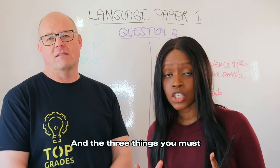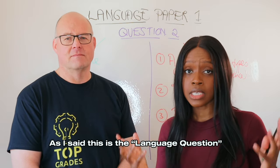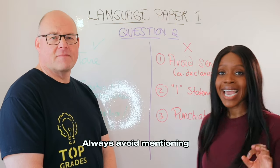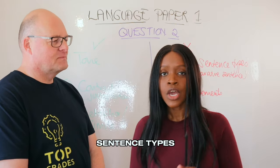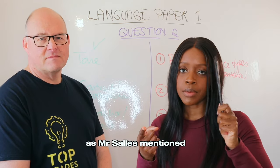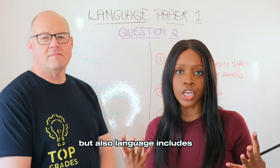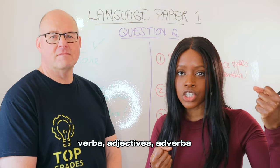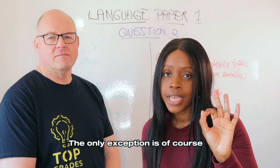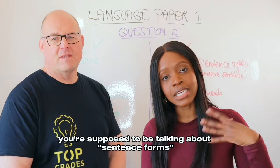The three things you must absolutely avoid in your question number two response — the language question. Number one: always avoid mentioning sentence types. Remember that language features mean things like metaphors, similes, but also literally things like nouns, verbs, adjectives, and adverbs, while sentence types are technically structure. The only exception is when you're considering the third bullet point — the bullet point where you're supposed to be talking about sentence forms. I always advise students to mention declarative sentences in one of their paragraphs alongside a metaphor or contrast, showing how it's illustrated in a declarative sentence from the quotation.